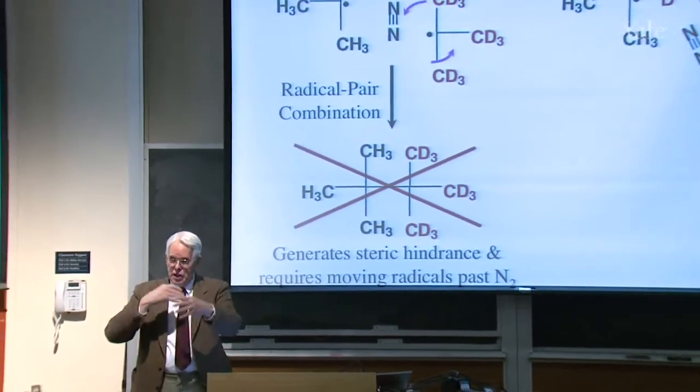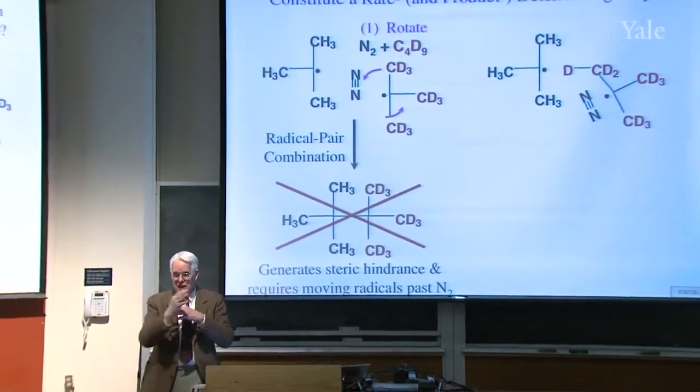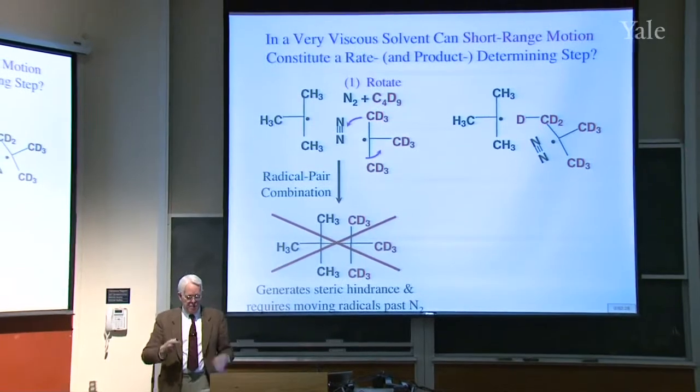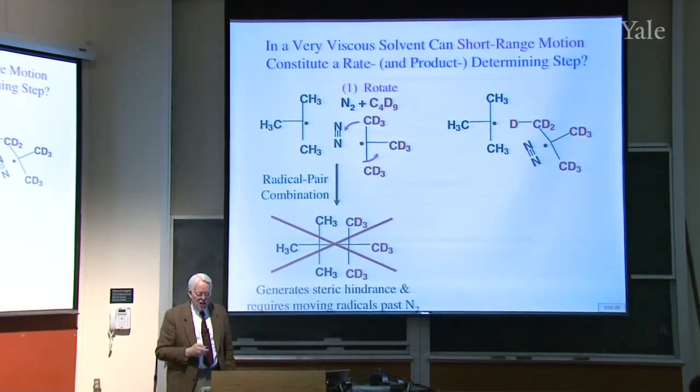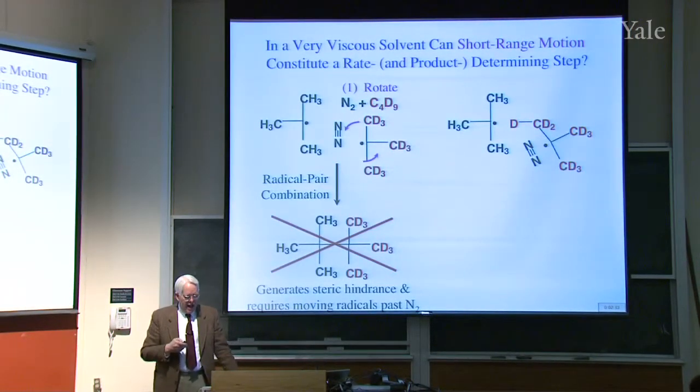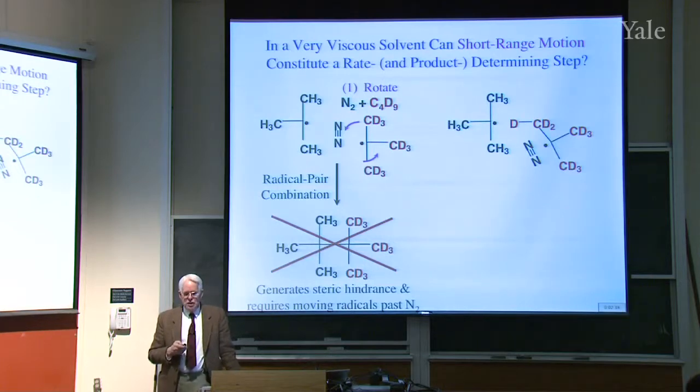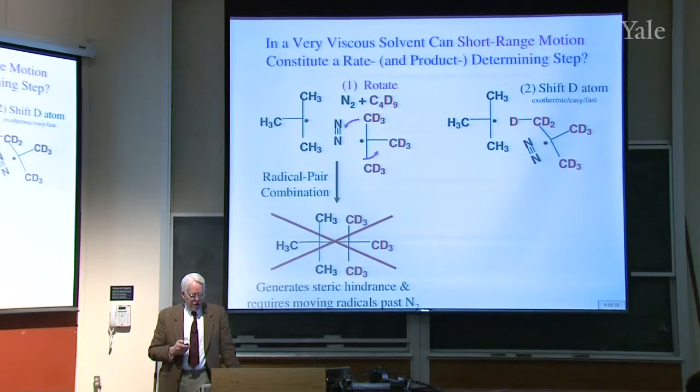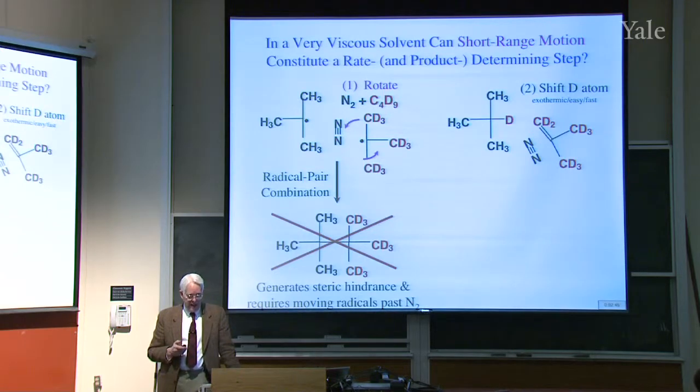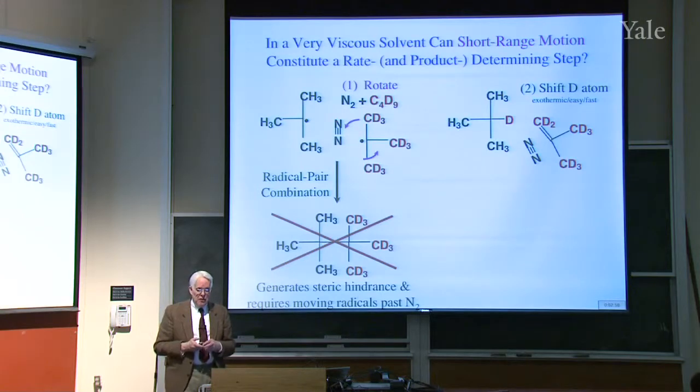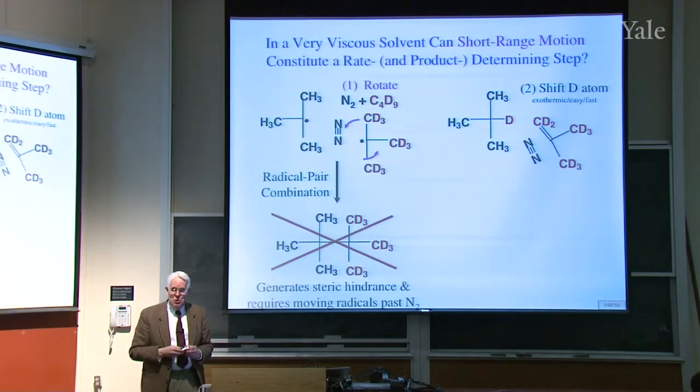Instead of that, what happens is you rotate that t-butyl radical together with the nitrogen. It's just a rotation. You don't have to actually move things by translation, just rotate them to get that geometry shown at the right. And now one radical is close enough to the deuterium on the other, that you can get a deuterium atom transfer, which is very exothermic, easy and fast. So that would generate the alkene and the alkane by deuterium transfer.